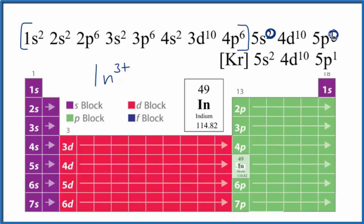So I put a 0 up here. And this would be the electron configuration for In3+. This is the long form. And down here this would be the short form, the abbreviated form, for the indium 3 plus ion.